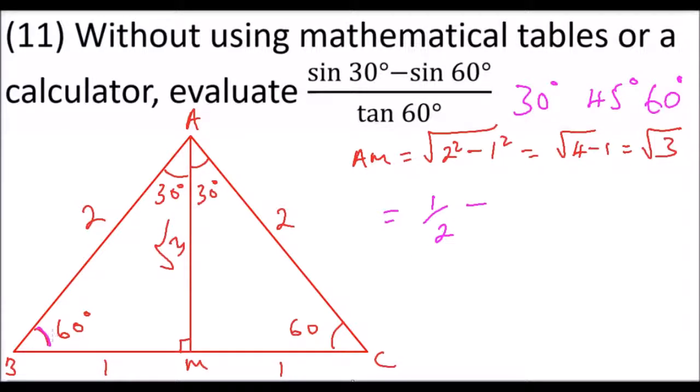Then we subtract sin 60°. Sin 60° equals the opposite side, which is root 3, divided by the hypotenuse, so it is root 3 divided by 2. Then we divide by tan 60°.